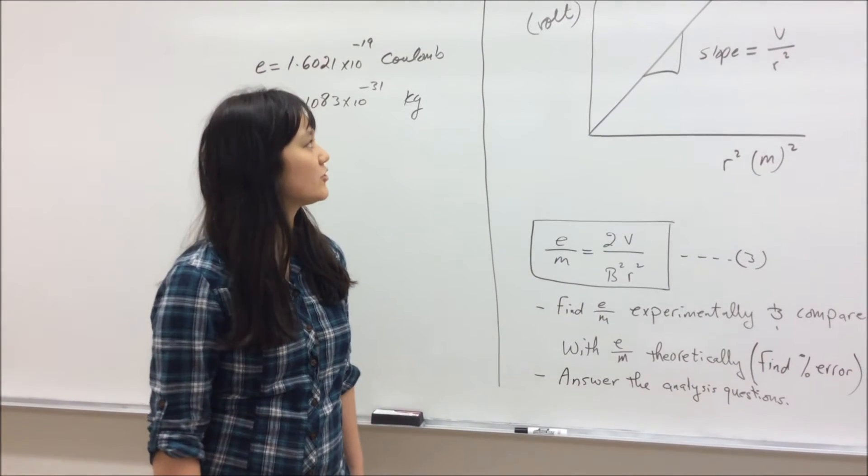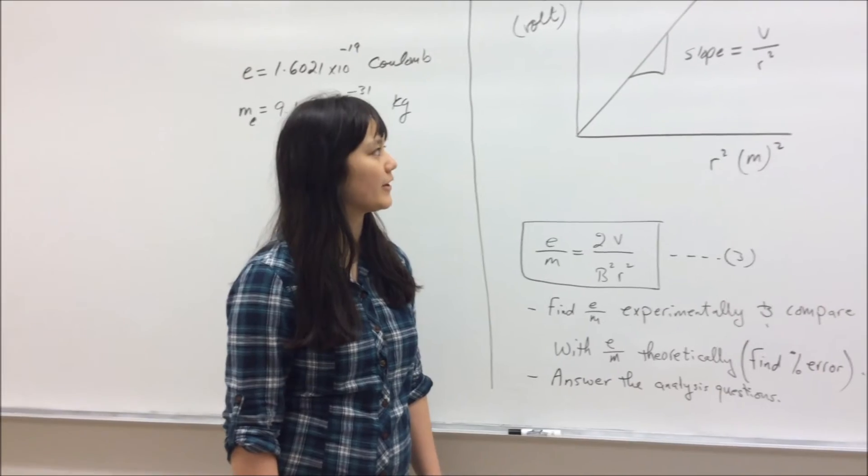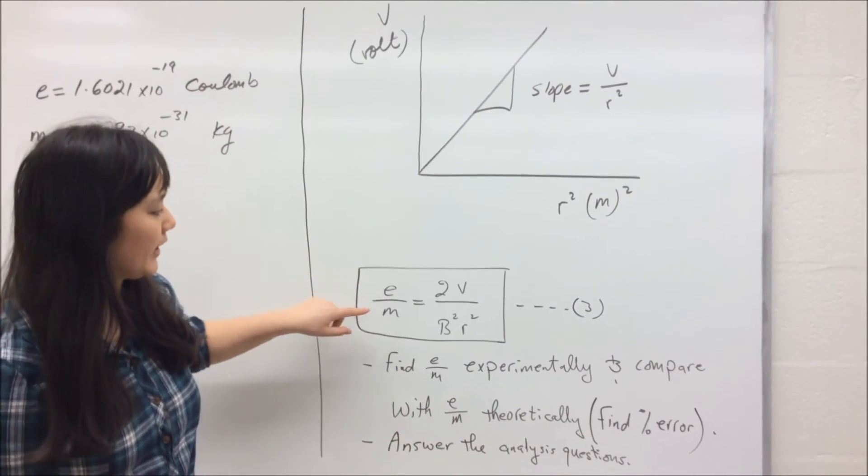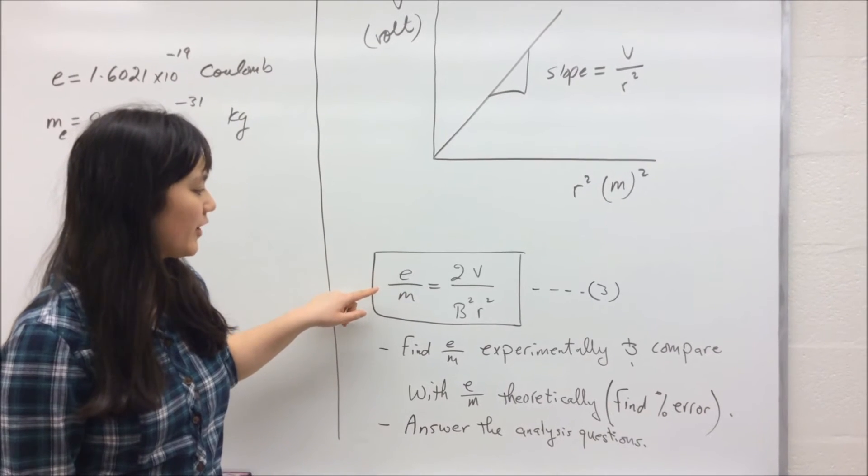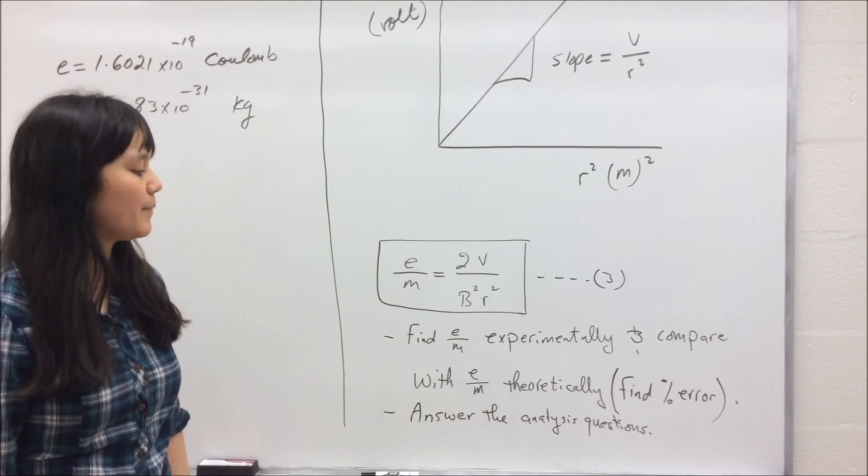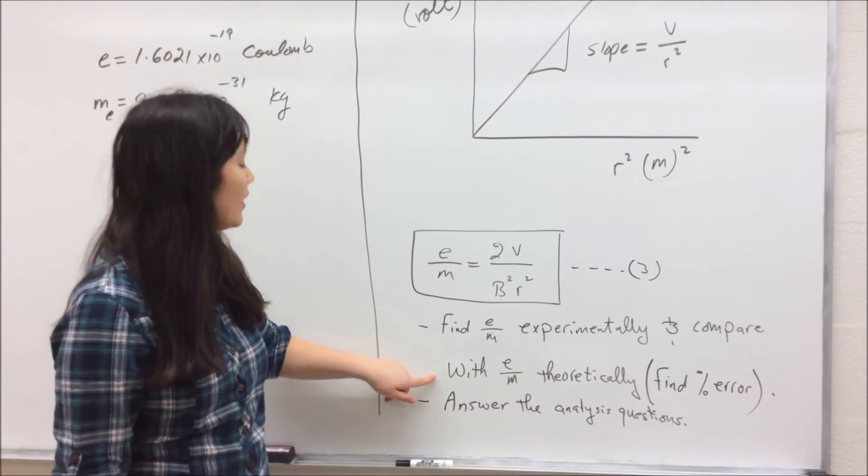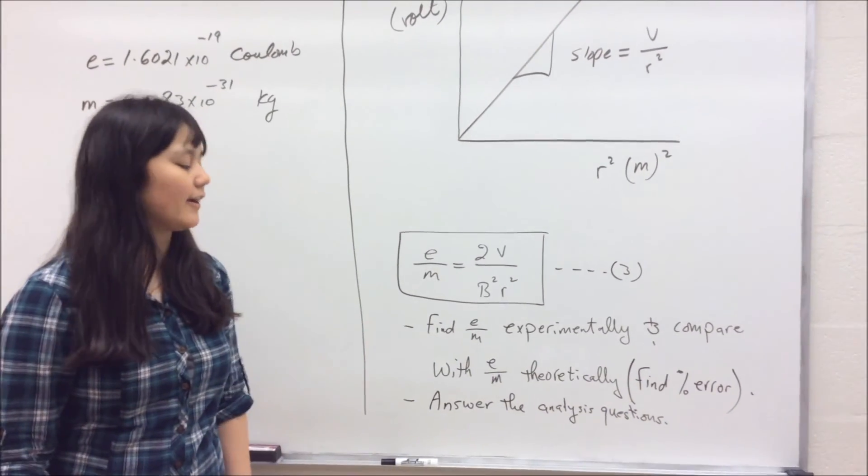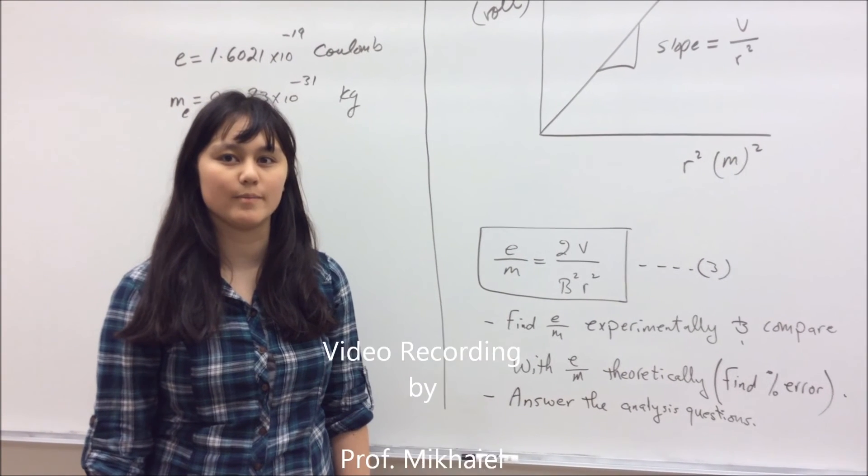Using the data table, you're going to construct a V versus R squared graph and find the slope. Using that value, you're going to plug it into this equation to find E over M experimentally, and then compare it to the theoretical value using these values right here. Then you're going to find the percent error, and lastly you're going to answer the analysis questions in your lab.